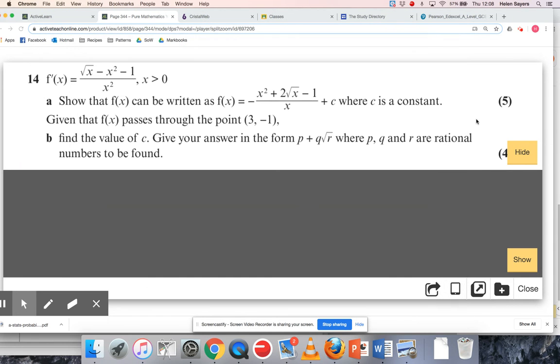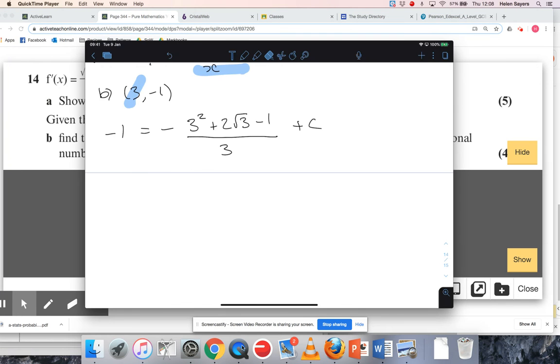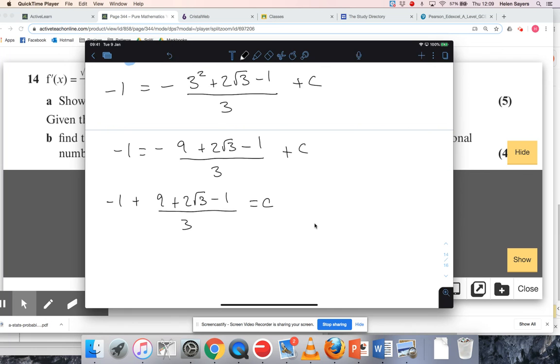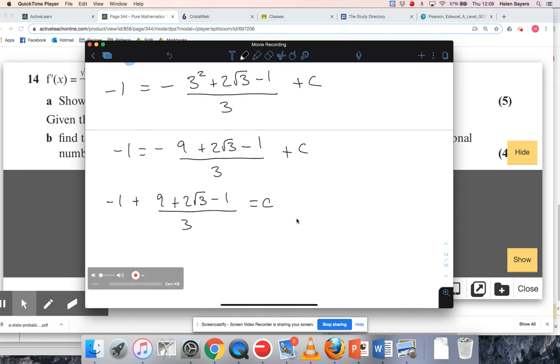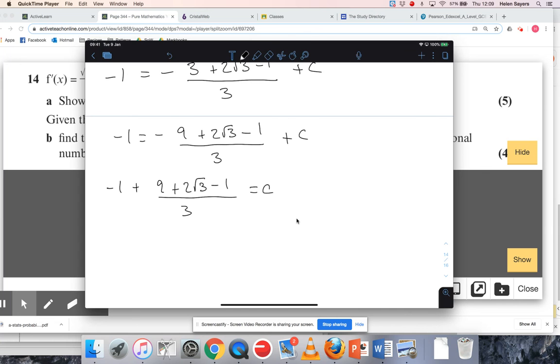So -1 = -(9 + 2√3 - 1)/3 + c, and I must make sure that that minus is in front of the entire fraction. So all I've done there is substitute x equals three into that. And when x equals three, y should equal -1. And I'm trying to figure out what plus c is. And they want it in a particular form. Yeah, so basically I can't just stick it into my calculator because it'll give it to me as a decimal. So let's tidy that up. So -1 = -(9 + 2√3 - 1)/3 + c. So if I add that fraction to the left-hand side, so it was a minus, and then I just need to collect everything together.